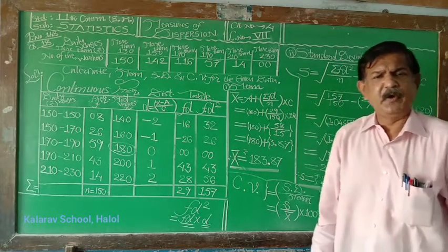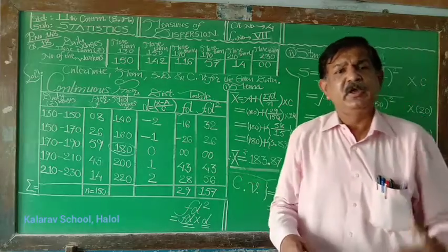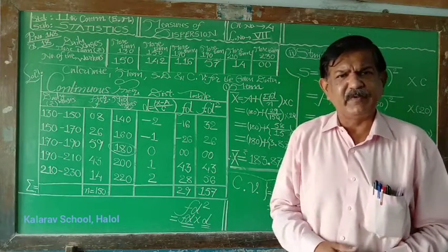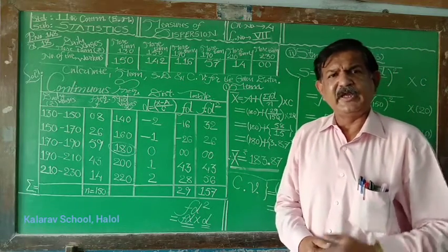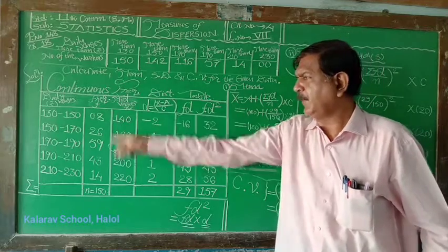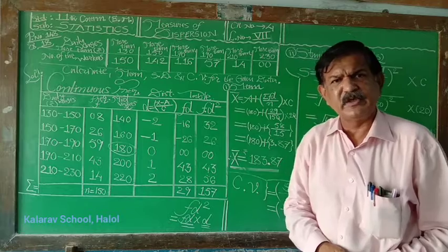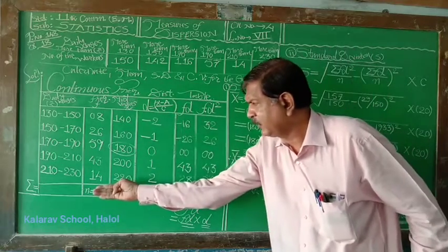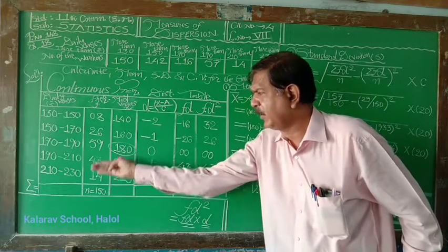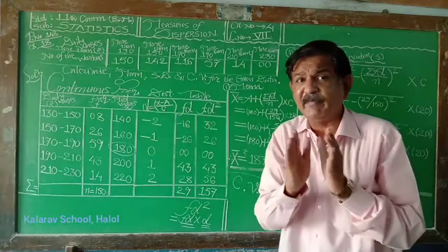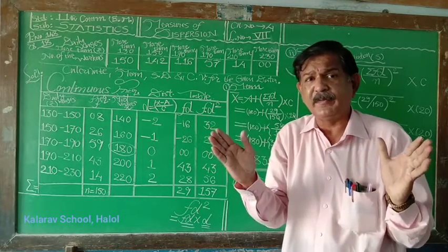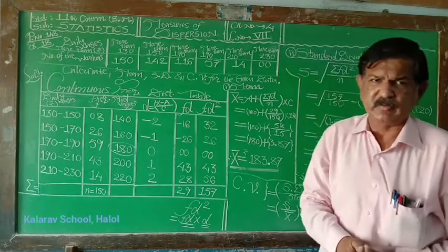One point should be noted in this example. If less than type cumulative frequency distribution is given, then calculation of frequency from top to bottom. And if more than type cumulative frequency distribution is given, then the calculation of simple frequency is from bottom to top. This is the main difference between two types of cumulative frequency distribution.